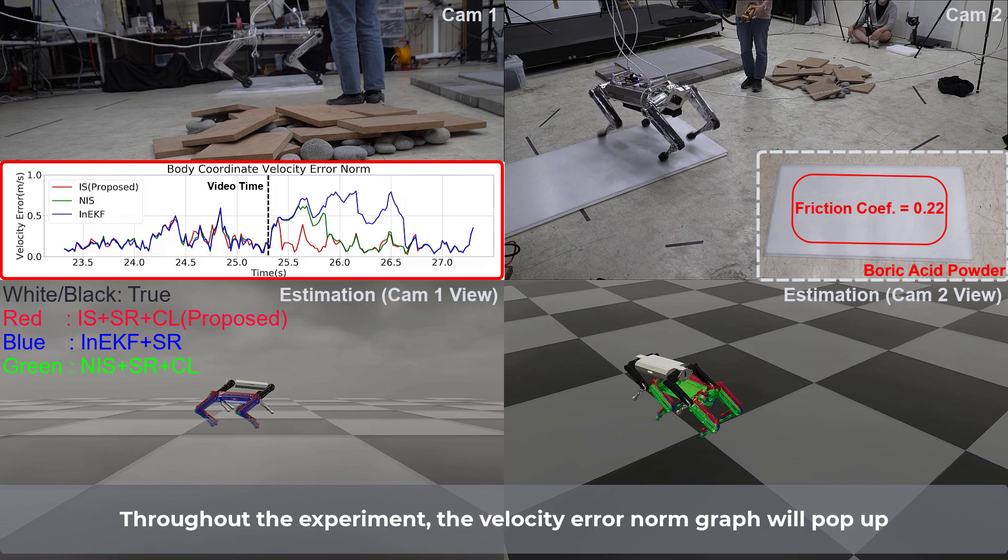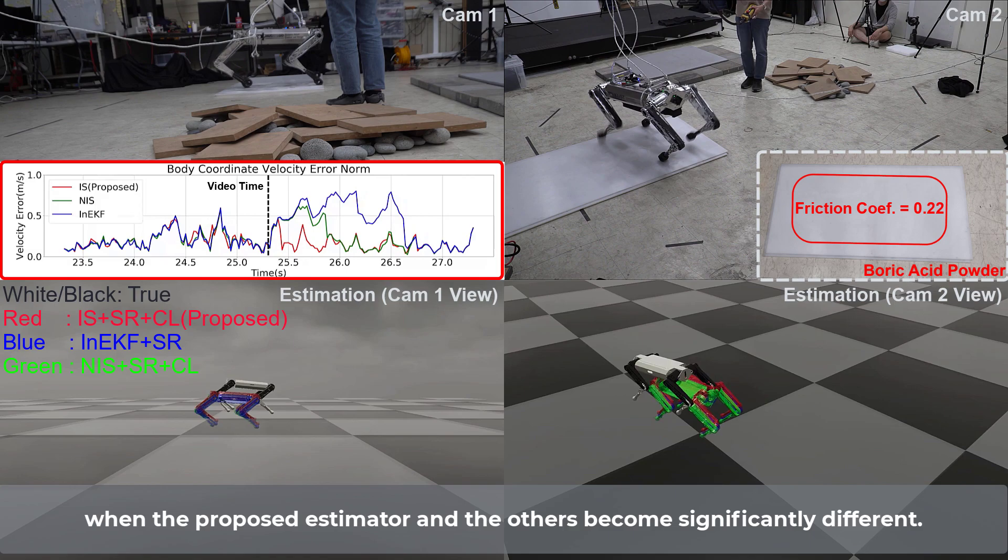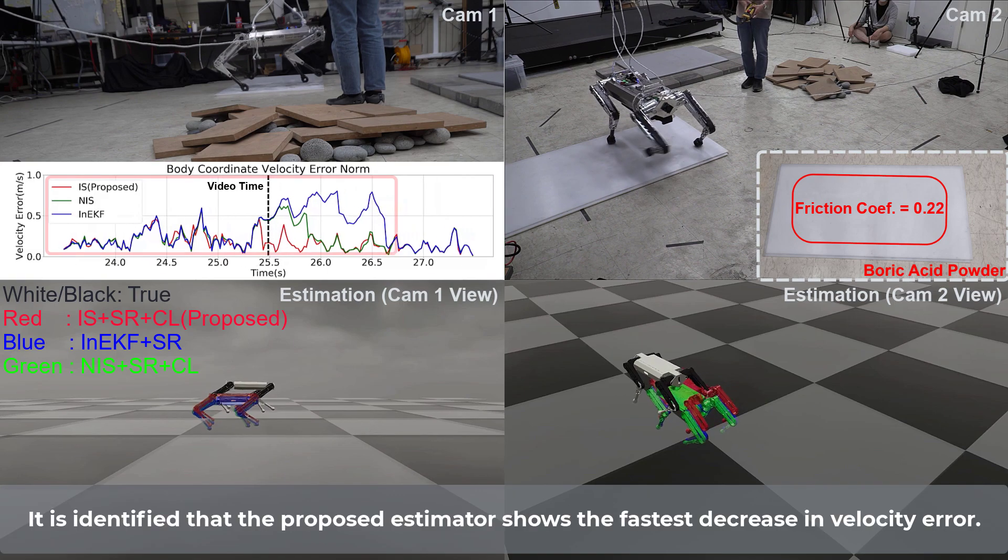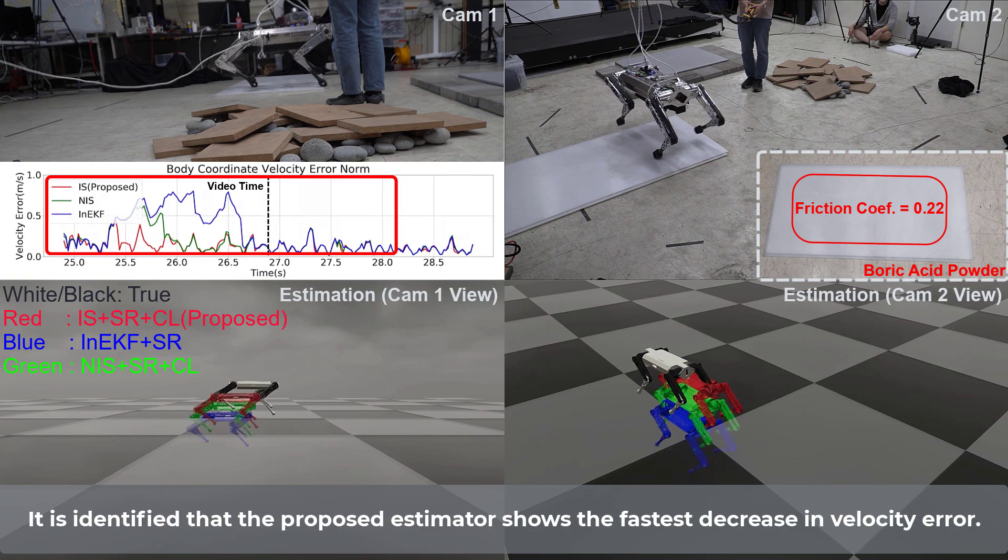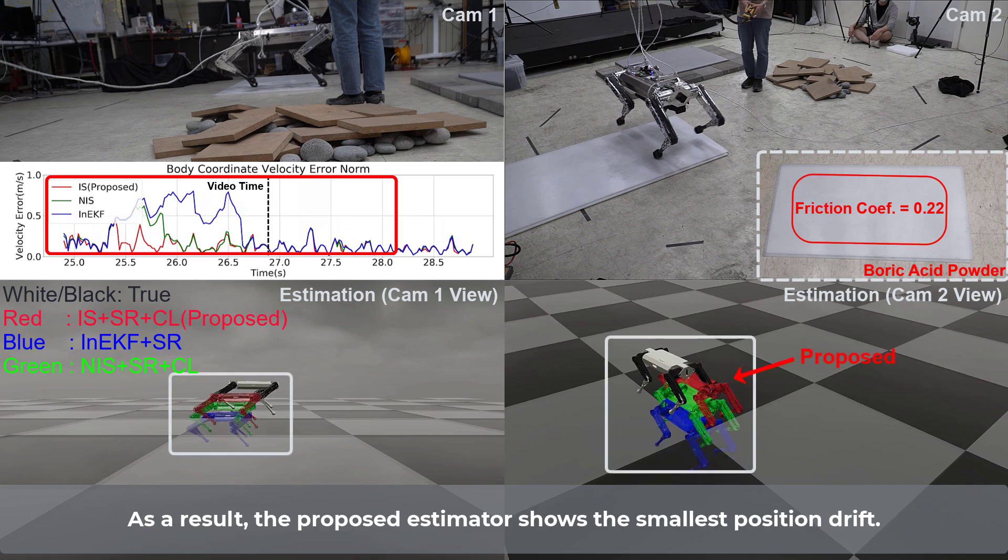Throughout the experiment, the velocity error norm graph will pop up when the proposed estimator and the others become significantly different. It is identified that the proposed estimator shows the fastest decrease in velocity error. As a result, the proposed estimator shows the smallest position drift.